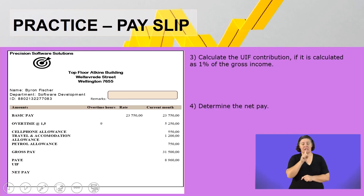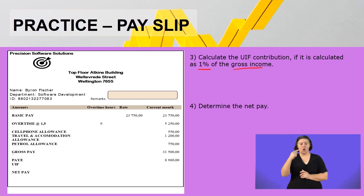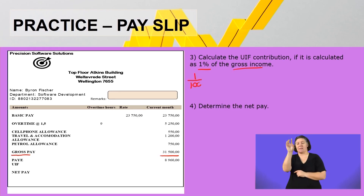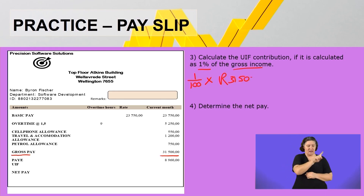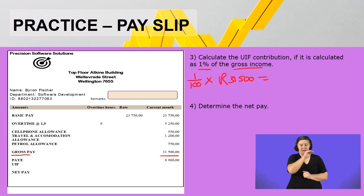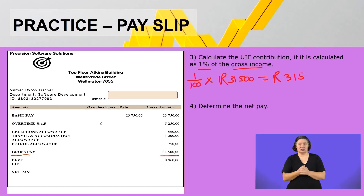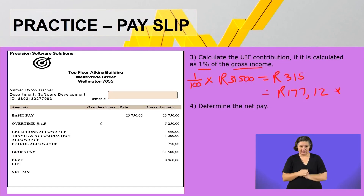Question number three: calculate the UIF contribution if it is calculated at 1% of the gross income. Our gross income is 31,500 rand. So 1% of 31,500 rand: 1 over 100 multiplied by 31,500 equals 315 rand. However, since 1 July 2021, they decided to set a ceiling amount — meaning they can't deduct more than that for UIF. The ceiling is limited to 177 rand and 12 cents. Remember that 177 rand and 12 cents is the ceiling amount for your UIF contribution.